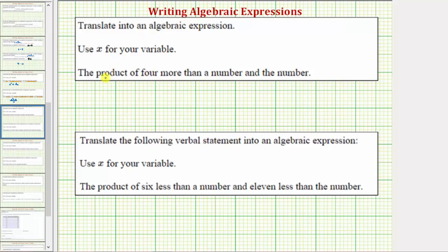So the first key word here is 'product.' Product means multiplication, and when multiplying we always have two factors. So we have the product of four more than a number and the number, which means the first factor is four more than a number and the second factor is the number.